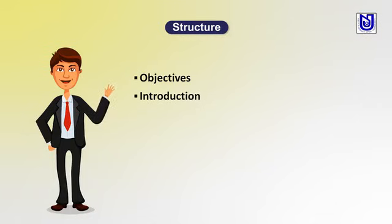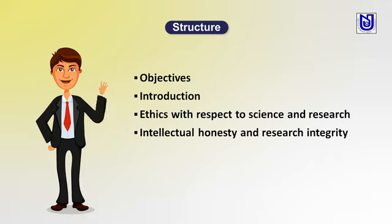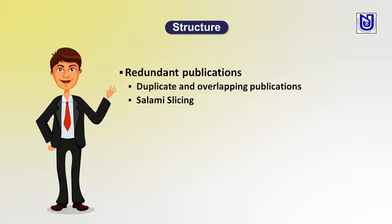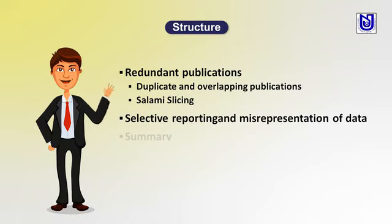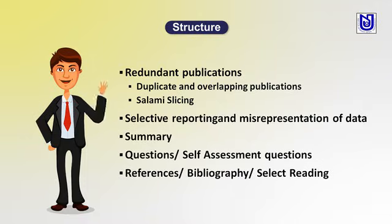We are going to cover the topic of Scientific Conduct. The structure of this course includes: ethics with respect to science and research, intellectual honesty and research integrity, scientific misconduct — FFP, that is falsification, fabrication and plagiarism — redundant publications, duplicate and overlapping publications, selective reporting and manipulation of data, then summary, questionnaire, assessment, and reference and bibliography.